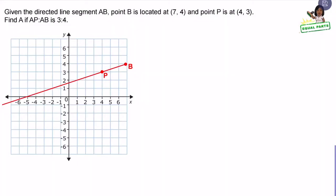Given the directed line segment AB, point B is located at seven, four, and point P is at four, three. Find A if AP to AB is three to four.